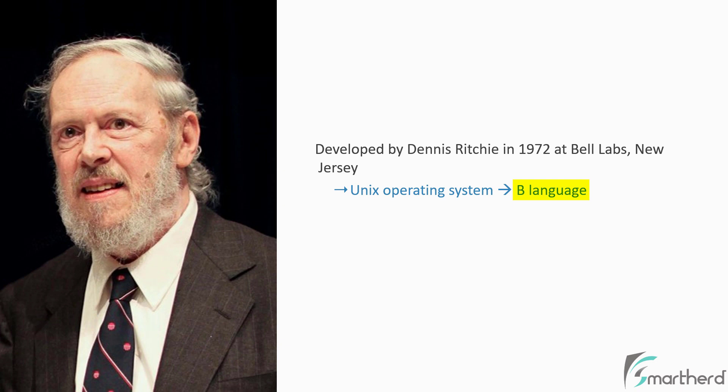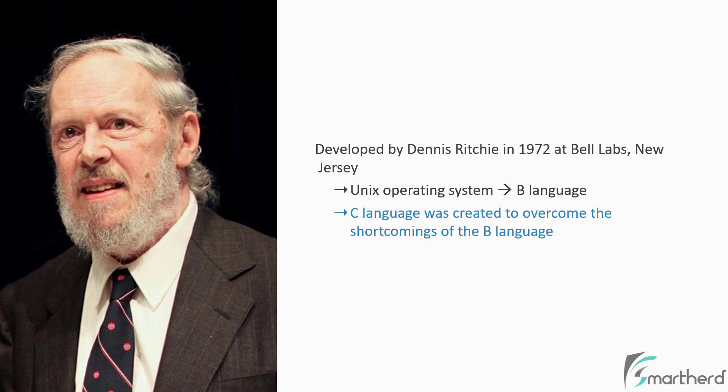But this B language was really slow, and in terms of performance, it could not meet the expectations of Dennis and his team. So in 1972, Dennis started working on this B language, which eventually led to the creation of C programming language. And then the entire Unix operating system was rewritten in C language.